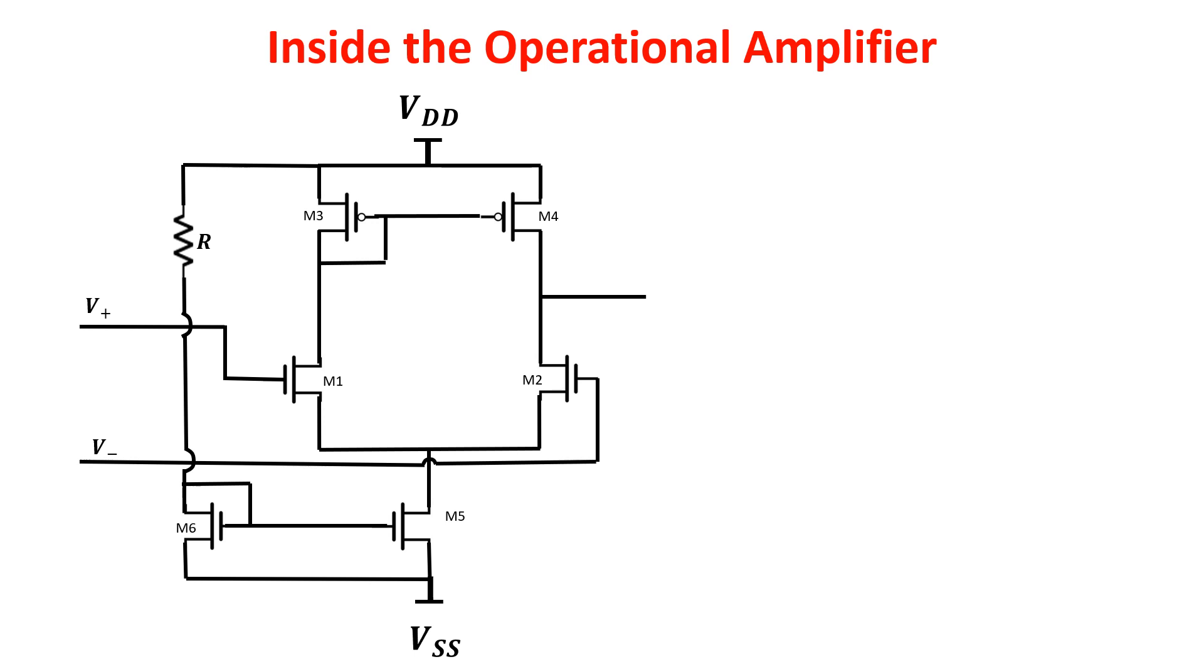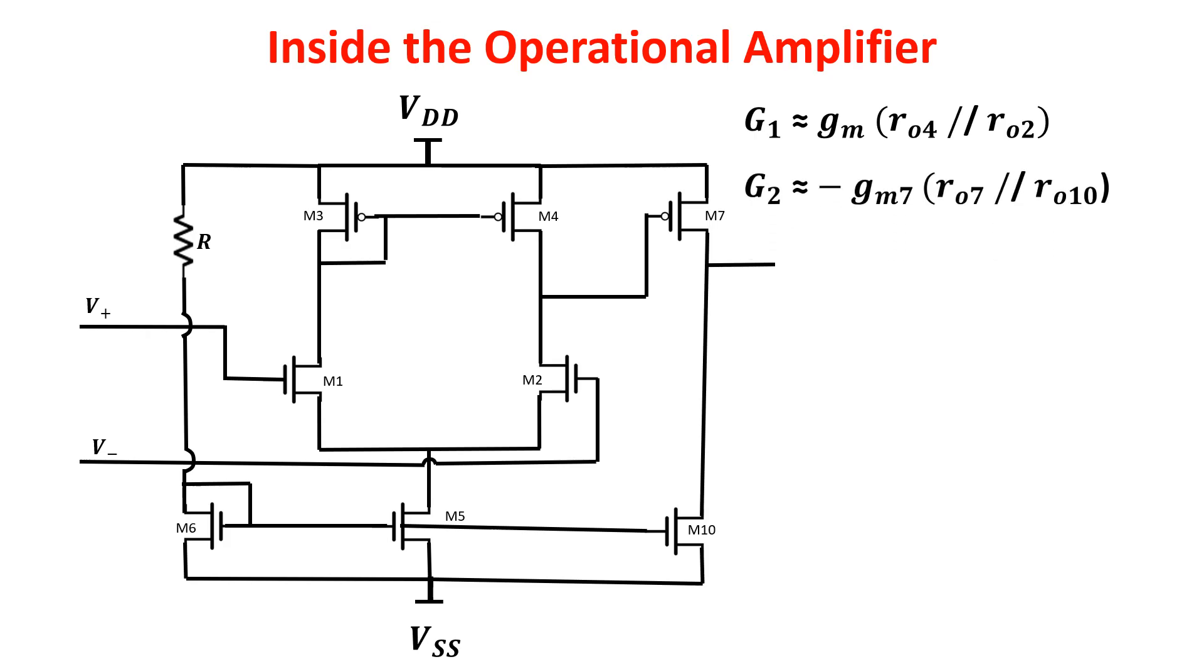For the sake of simplicity, we just add another gain stage. In particular, we add a simple common source stage with MOSFET M10 for the biasing of the stage. Note that M7 has to be a PMOS, because an NMOS cannot be used for bias considerations. The gain of the first stage is preserved because from the output of the first stage we see the gate of M7, which has a very large resistance. The gain of the second stage is simply negative GM7 times the parallel of RO7 and RO10, and we assume it is more or less equal to negative 50. So the total gain is the product of the two gain stages, and it is about negative 2500. In order to have a positive gain, we can swap the positive input with the negative one.